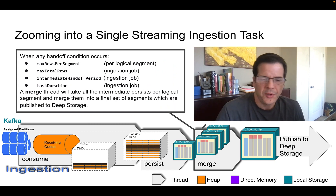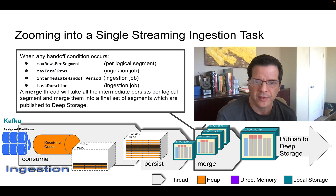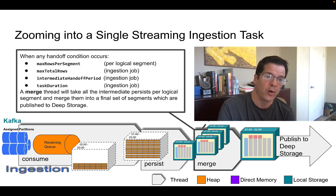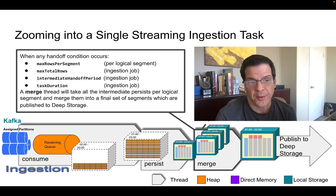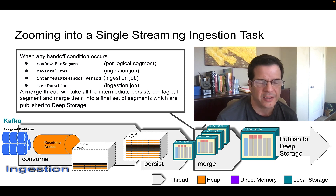Consumption and persists continue, producing multiple intermediate persist files. We track the total number of rows persisted by logical segment. If a threshold occurs — specifically max rows per logical segment, max total rows across all tasks, a time threshold managed by the intermediate handoff period, or the end of the task duration — this initiates the merge operation.